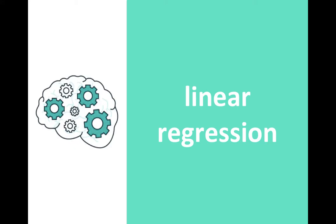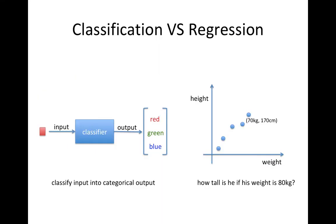Hello. Today let's briefly summarize how linear regression works. In machine learning, supervised learning, there are two big categories. One is classification and the other is regression.